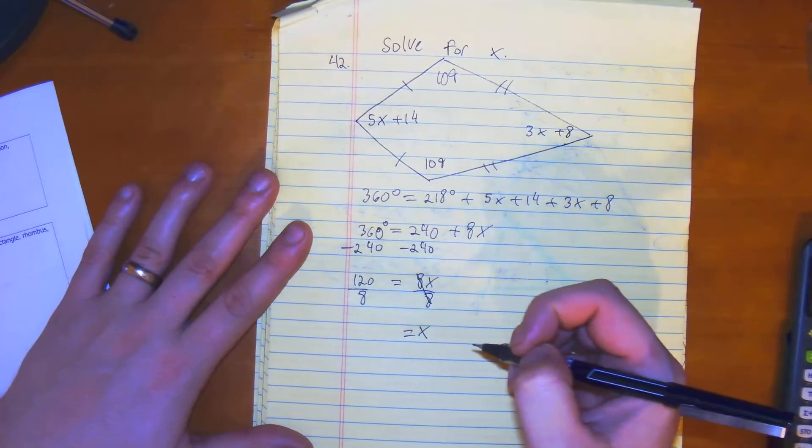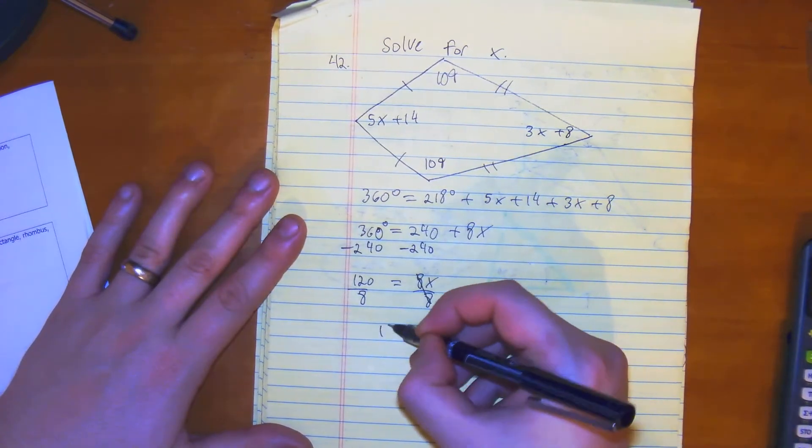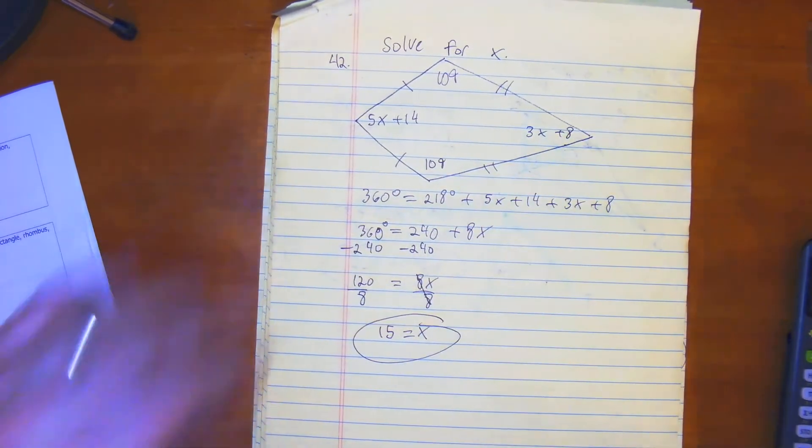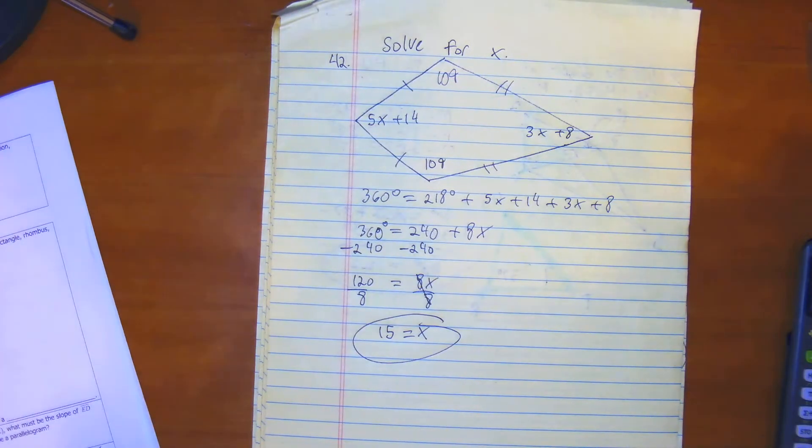So x goes into 120, 15 times, so the answer for this one would be 15.